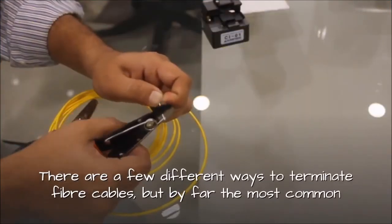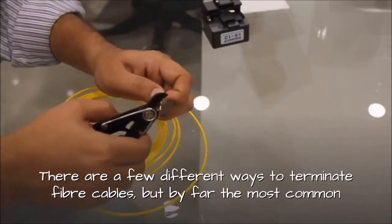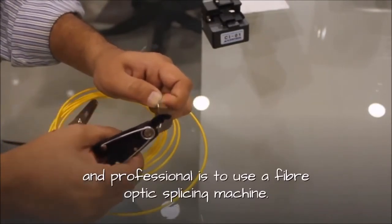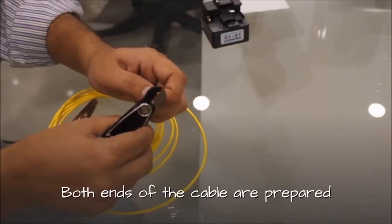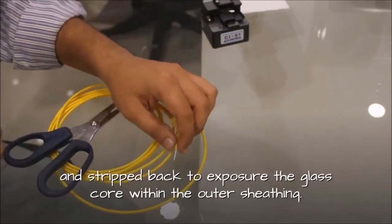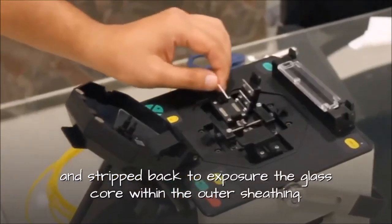There are a few different ways to terminate fiber cables, but by far the most common and professional is to use a fiber optic splicing machine. Both ends of the cable are prepared and stripped back to expose the glass core within the outer sheathing.